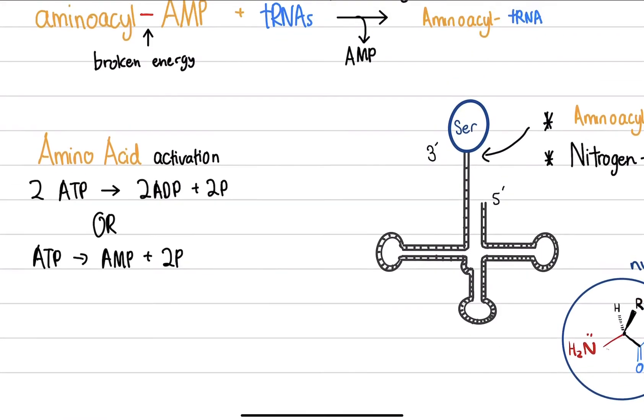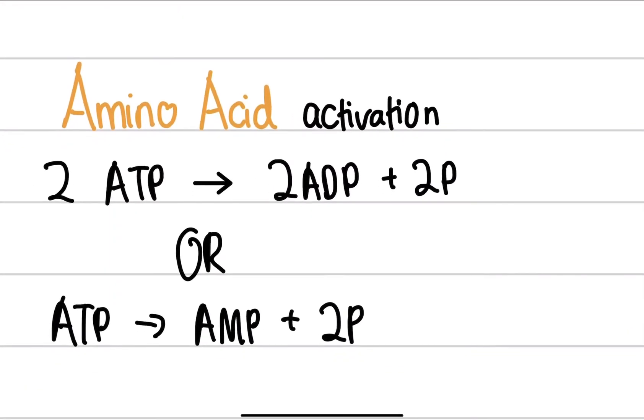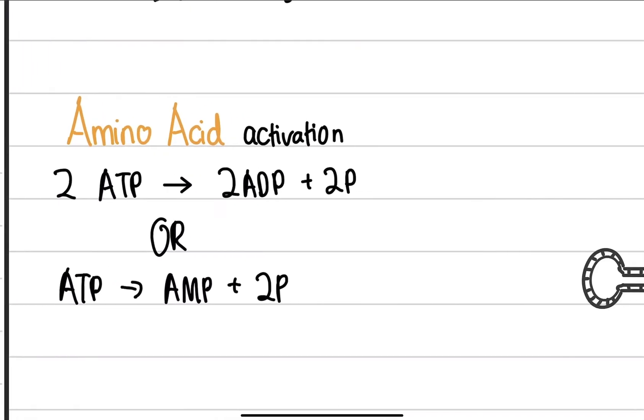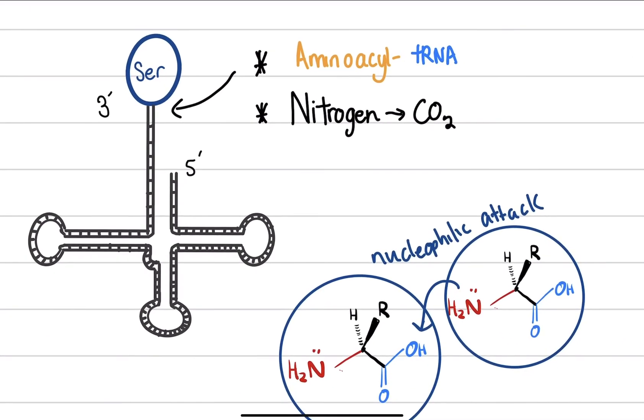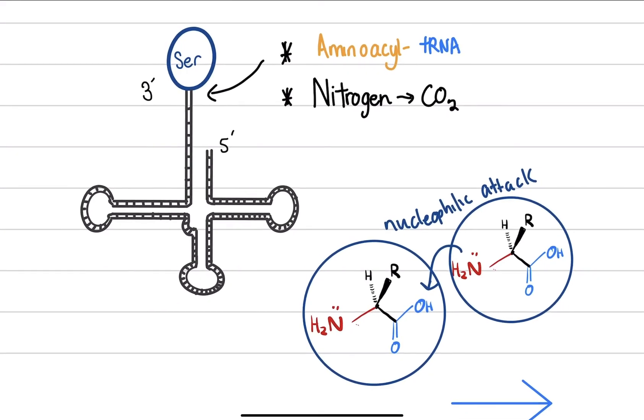So we want to quickly look at this once again. I want to highlight that the amino acid activation is using two high energy phosphate bonds. And this is called the two ATP equivalents. And I've said that before as well. So this is an example of what's happening.